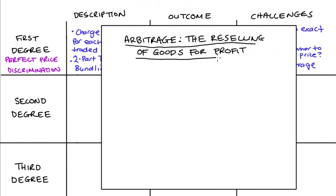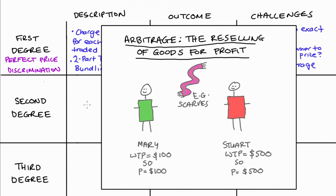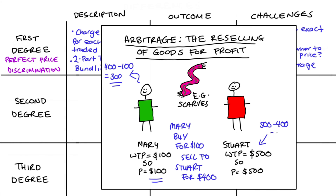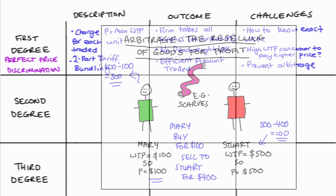For instance, imagine we sell scarves and have two customers, Mary and Stuart. If Mary's willingness to pay for a scarf is $100, that's the price she'll be charged. If Stuart's highest willingness to pay is $500, that's what he's charged. Mary can then buy a scarf for $100 and sell it to Stuart for any price up to his willingness to pay — say $400 — making $300 in profit. Stuart doesn't have to pay $500, so he's better off by $100. If this arbitrage is possible, the firm has failed to get Stuart to pay the higher price and the price discrimination has not worked. So first degree is hard to pull off.